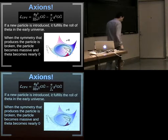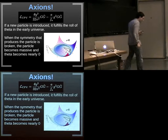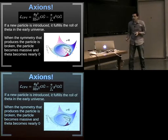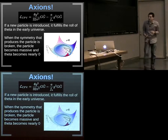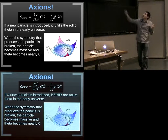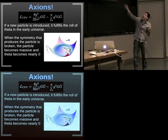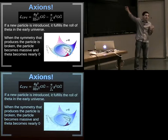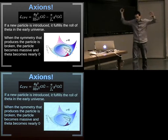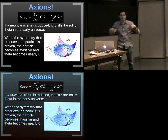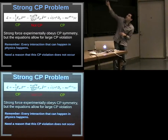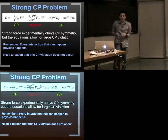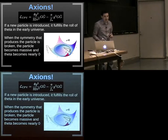It was proposed by Peccei and Quinn that there's a particle called an axion. Axions are very light particles in the universe, and they give you a minus term that almost exactly cancels out that positive theta term. The early universe drives the axion term to exactly cancel out the theta term — you get an extra term in the Lagrangian which cancels the problematic term, and everything becomes zero.